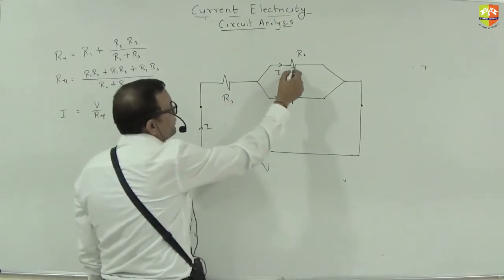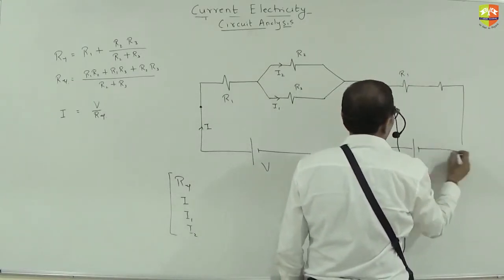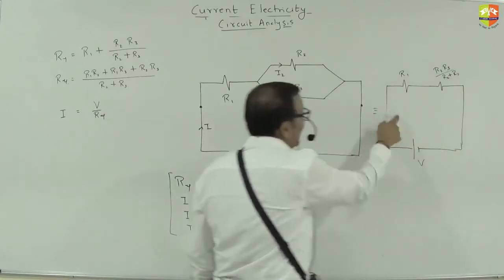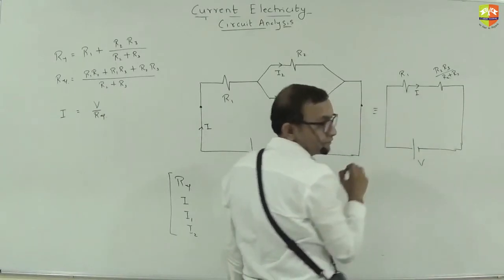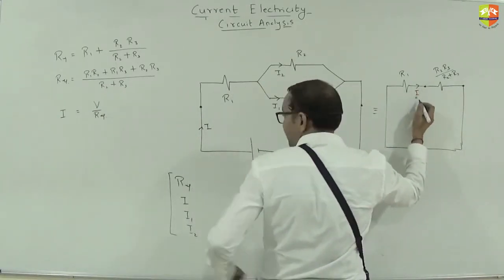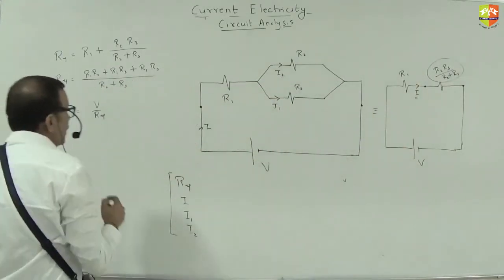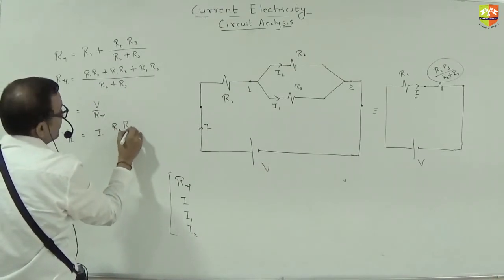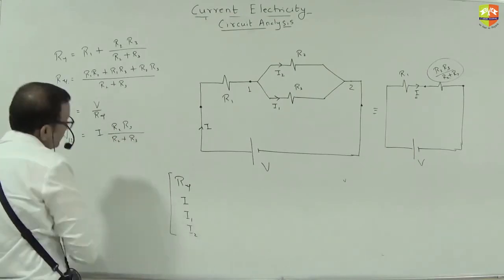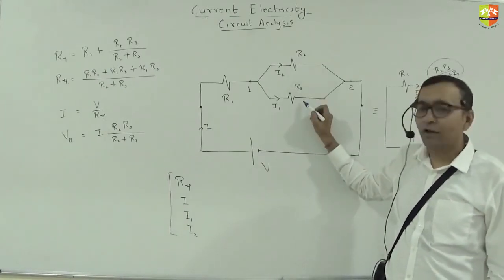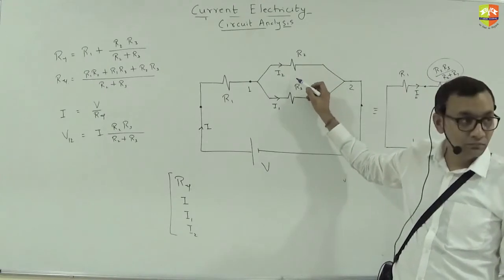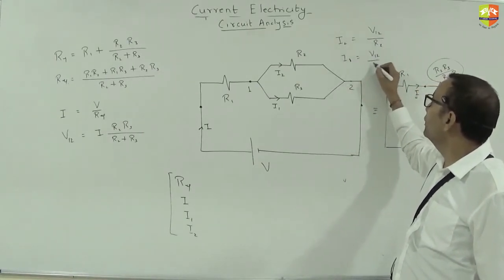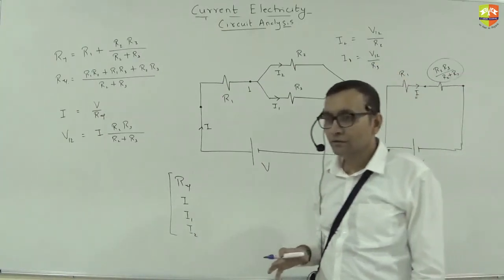Once you have the potential difference V12 across the parallel combination, apply Ohm's law to each branch: I2 = V12/R2 and I1 = V12/R3. This method of finding equivalent resistance first, then total current, then branch currents using potential differences is the standard approach. Similar questions are typically covered in class 10th.